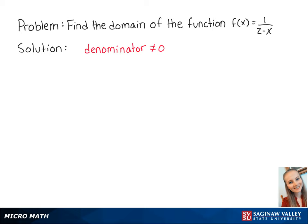So we're going to set up the equation 2 minus x cannot equal 0. If we add x to both sides, we get 2 cannot equal x.